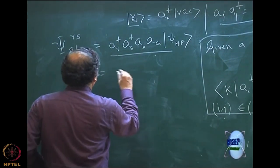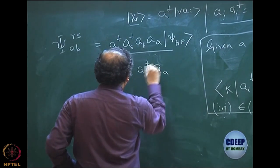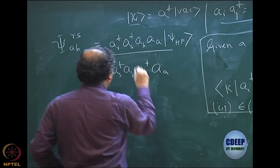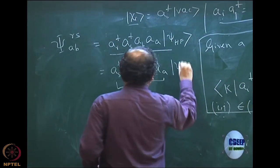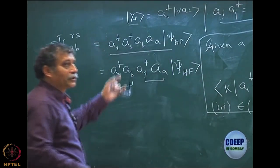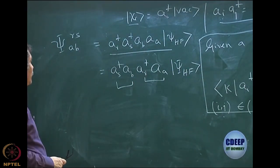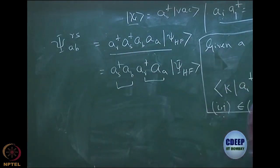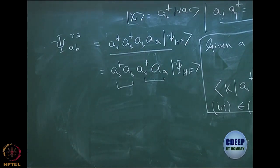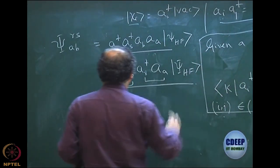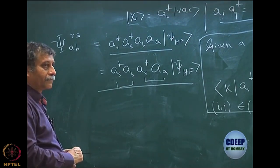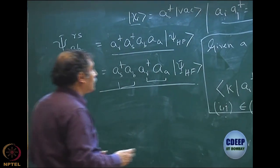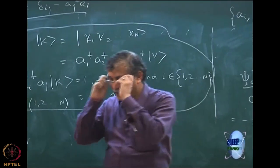Either way it is okay — you get psi_AB^RS. The reason I wrote it in a particular manner is because this will have significance when I write the Hamiltonian. So you should be able to handle wave functions using the second quantized notation. The last item to discuss is writing the operators in second quantization, because unless I write the operators in second quantization, I cannot do the physics — it involves wave functions and operators, and now I know how to write the wave function.